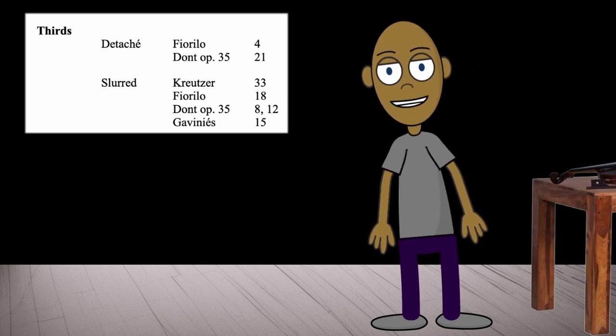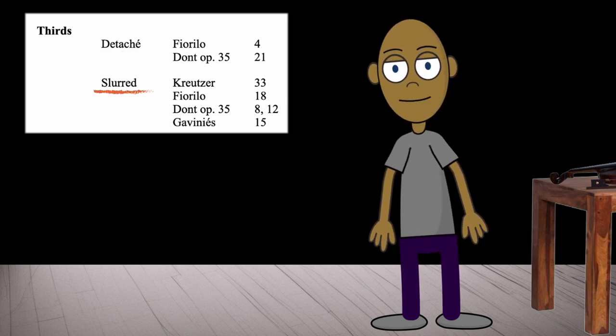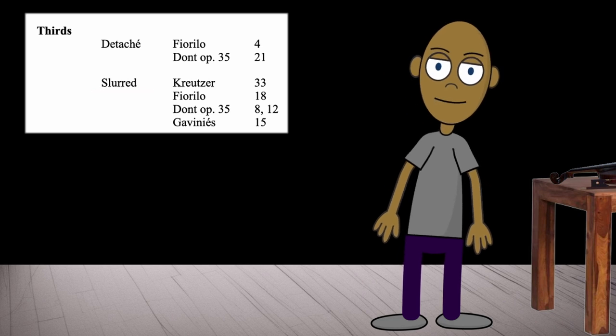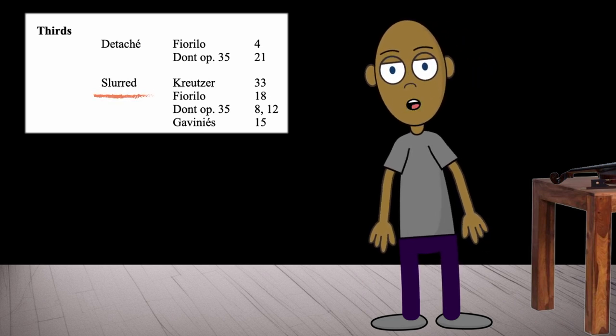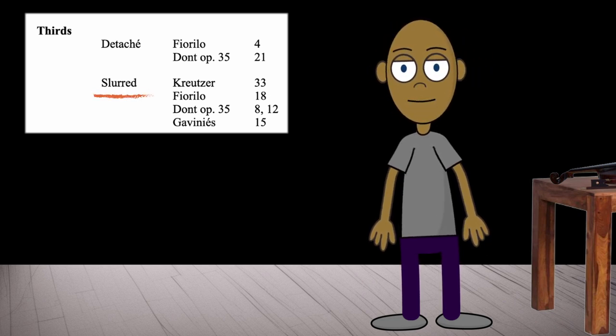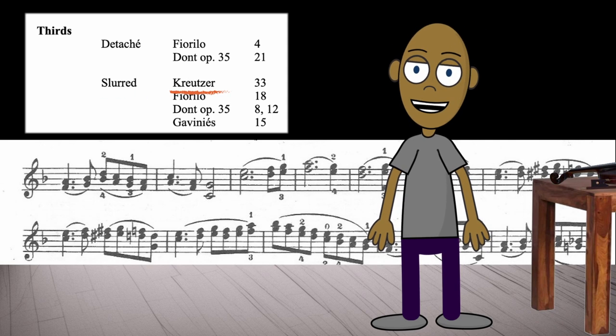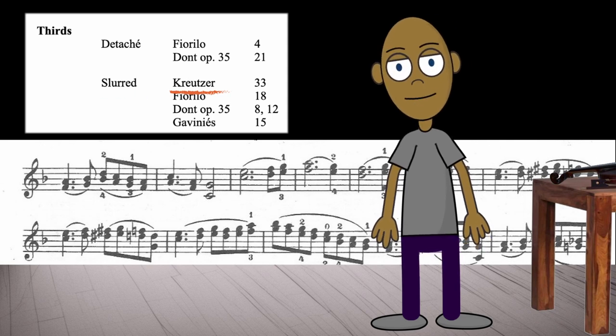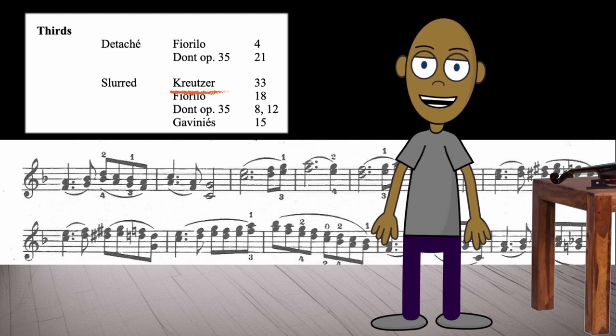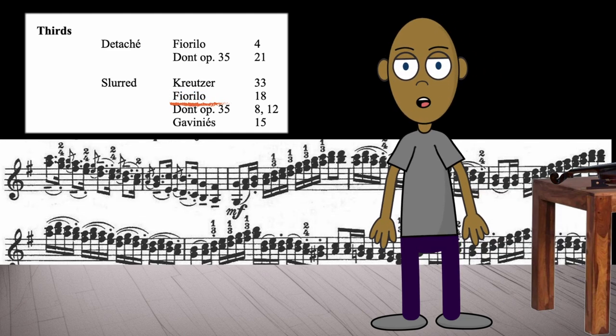Since thirds are classified as detached or slurred, we need to decide which to begin with. I've decided to start with slurred thirds. Once that decision made, first on the list is Kreutzer number 33. After a week or so, this one goes well. So you continue with Fiorillo number 18.